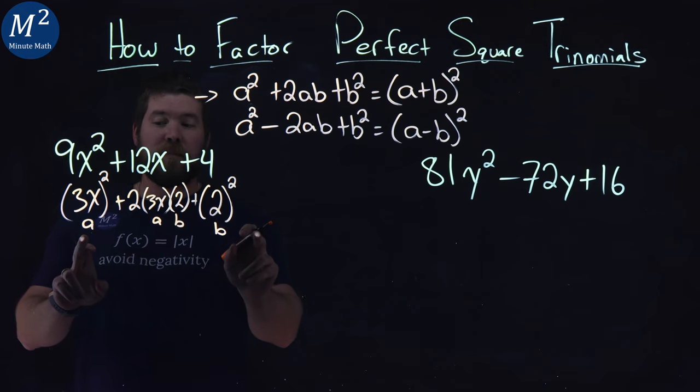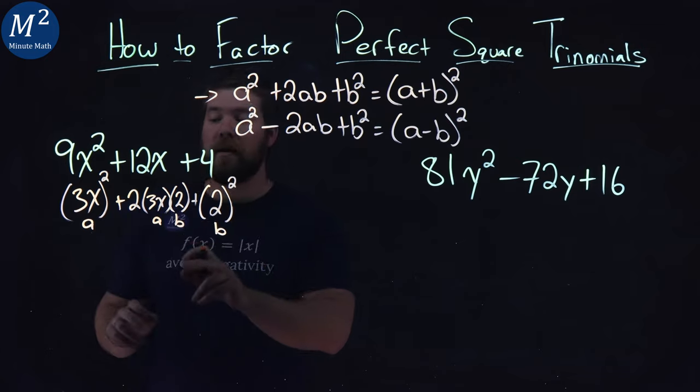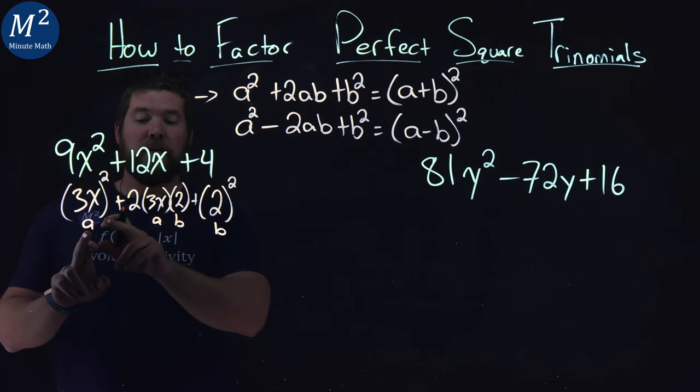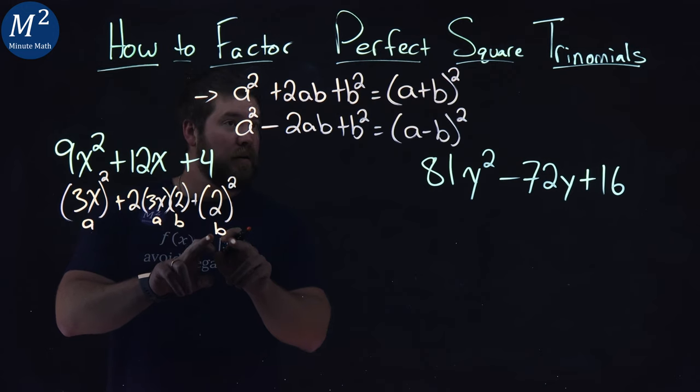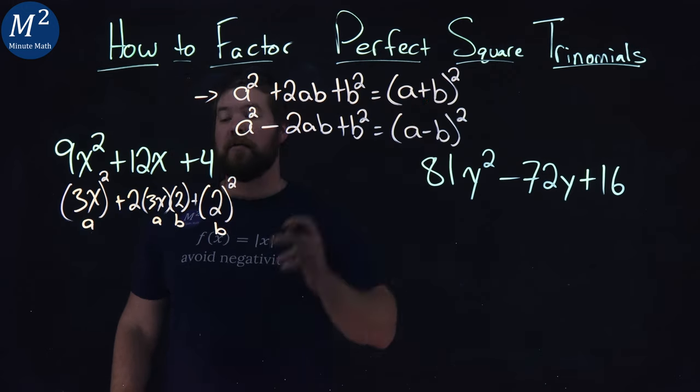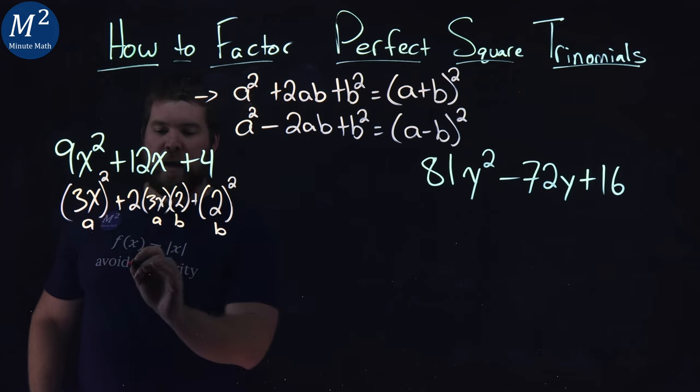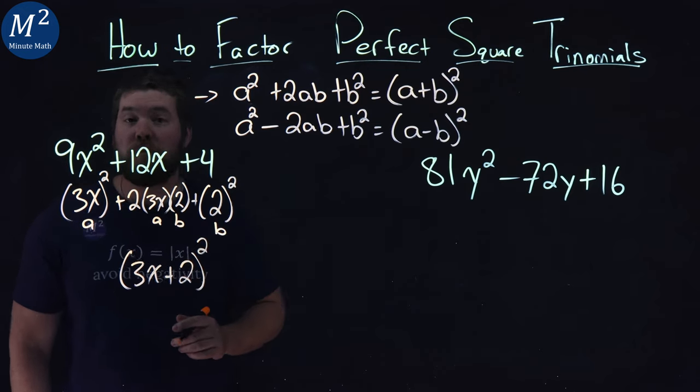We see the form 3x² + 2(3x)(2) + 2², which is a² + 2ab + b². We have that form for all the values. We can rewrite it as (a + b)². Our a value is 3x plus our b value, which was 2, and we can write that as (3x + 2)².